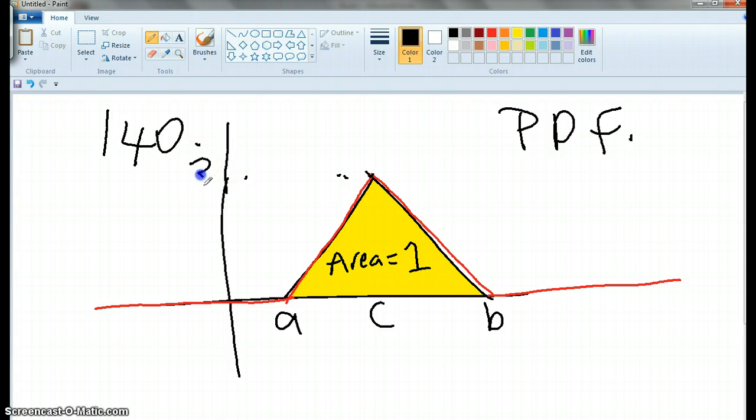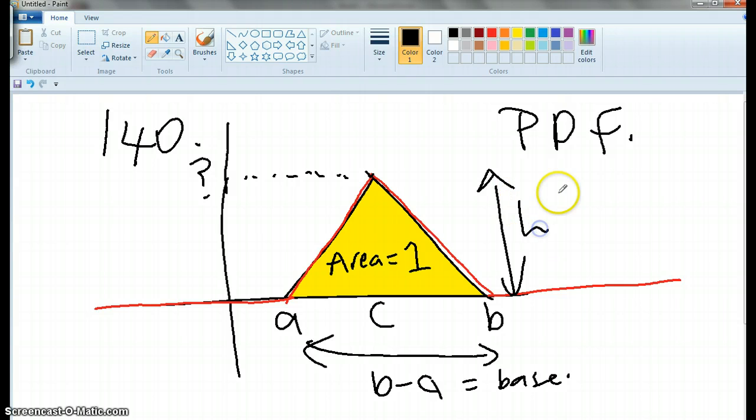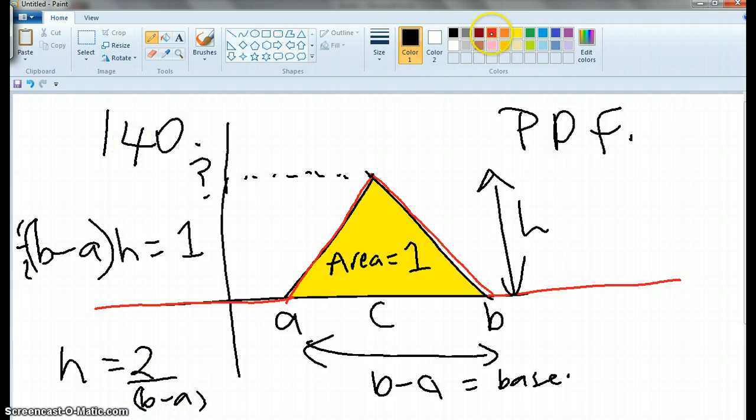So if that area is one, how do we find out our height? So I know that the base is b minus a, and my height is h. So we go b minus a times height equals one. So height, oh no, half base times height equals one. So h equals two over b minus a, because times both sides by two, the two came there, and then we divided by that.